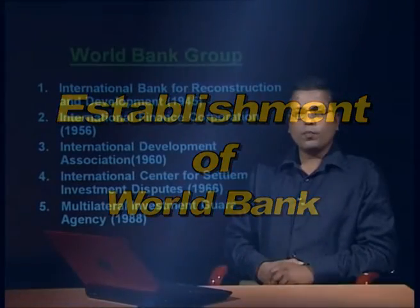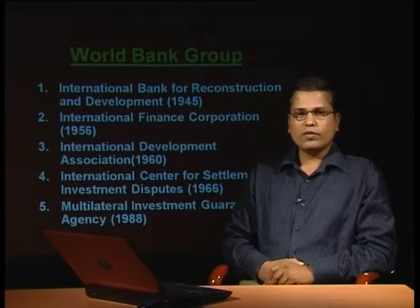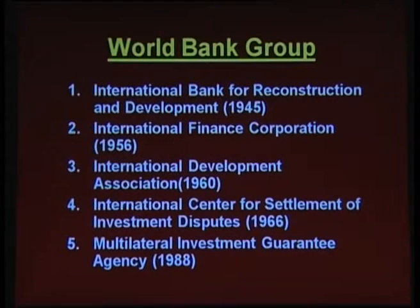The World Bank Group consists of five institutes: International Bank for Reconstruction and Development (1945), International Finance Corporation (1956), International Development Association (1960), International Center for Settlement of Investment Dispute (1966), and Multilateral Investment Guarantee Agency (1988). These five institutes have different objectives and purposes.